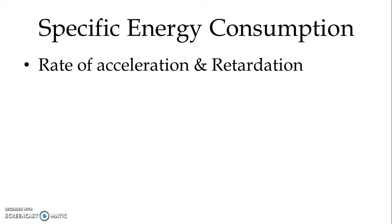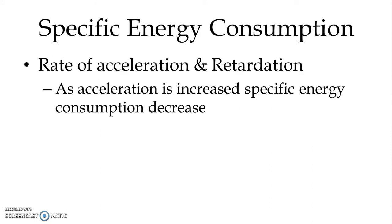The second factor is the rate of acceleration and retardation. For any given scheduled speed and distance to be traveled, if we increase the rate of acceleration or retardation, then specific energy consumption is less. The reason is that when we increase the acceleration or retardation for a given scheduled speed, the coasting period increases, and we only need to supply power up to the point when the coasting period commences. As acceleration is increased, specific energy consumption decreases.